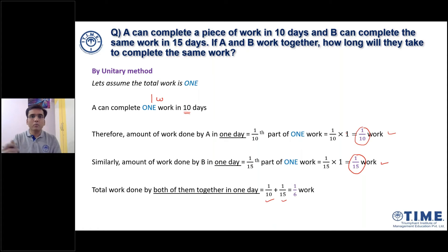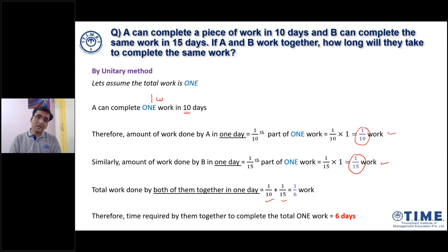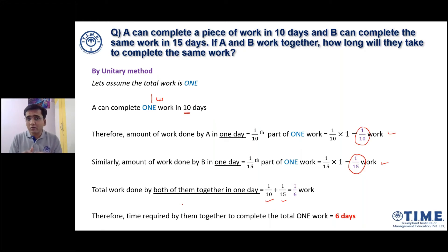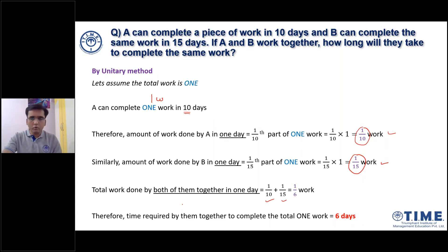Flip the one-day work to get total days — so yes, the time required by them together to complete the total work is six days. The many steps shown here are just for explanation purposes. In future questions, we will solve in just 2 or maximum 3 steps. This is just the first question to make sure the concept is very clear. This chapter of quantitative aptitude can be solved with minimum calculations — just 2 or 3 steps — provided you are very good at the concept.